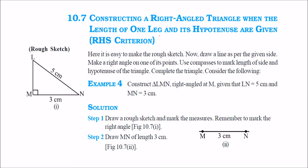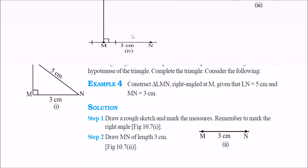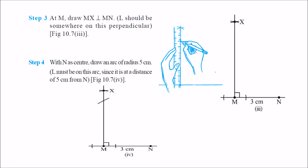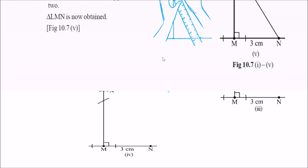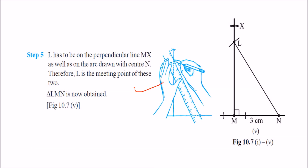Then we have the RHS criterion — quite easy to make. For example, LN = 5, MN = 3, and angle M = 90 degrees. Make MN = 3, make a 90-degree angle at M, then from L cut an arc of 5, and join. This is the required triangle. So: make 3, make a perpendicular, cut 5, and join — this is your final triangle using ruler and compass.